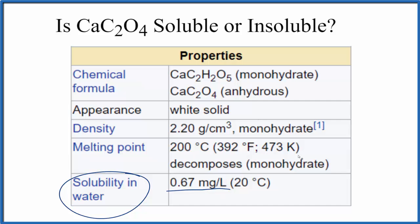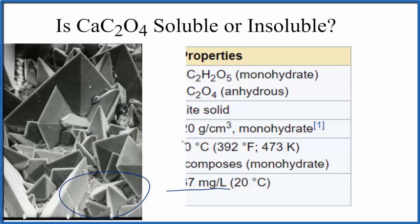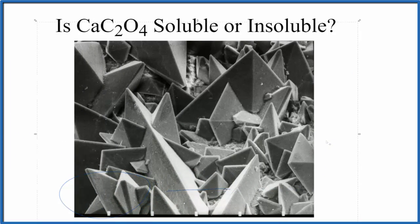In our body, we can have this calcium oxalate form crystals called kidney stones, and they can be quite painful. You can see these are crystals of calcium oxalate—this is an electron micrograph, so very high magnification.